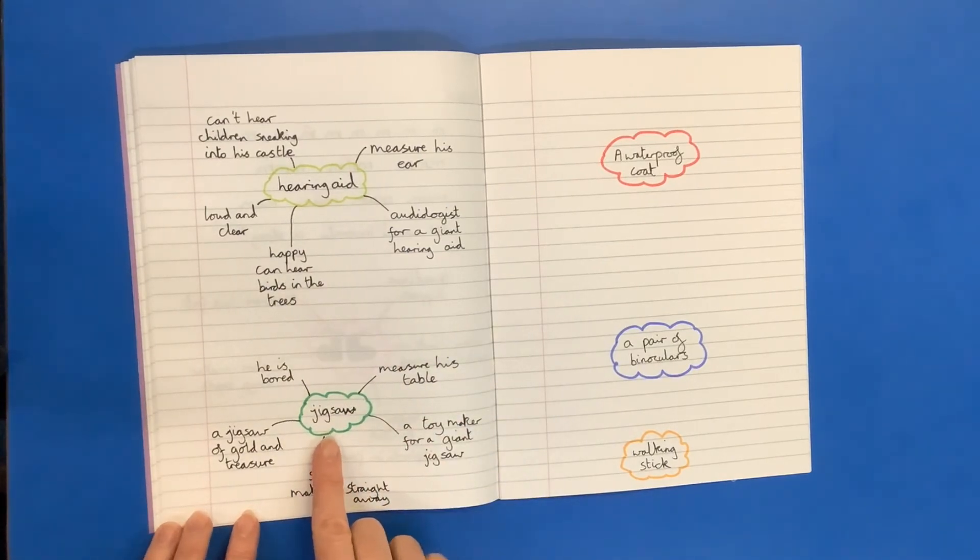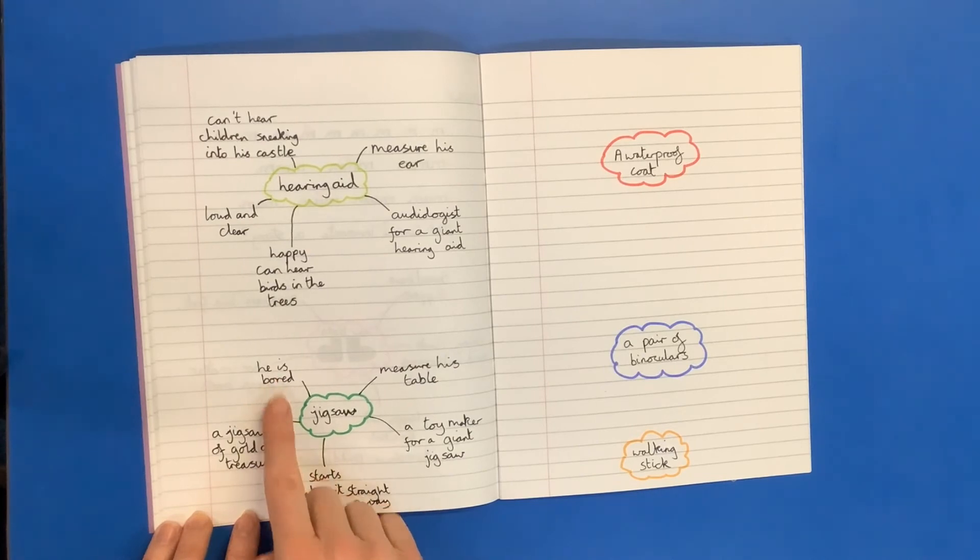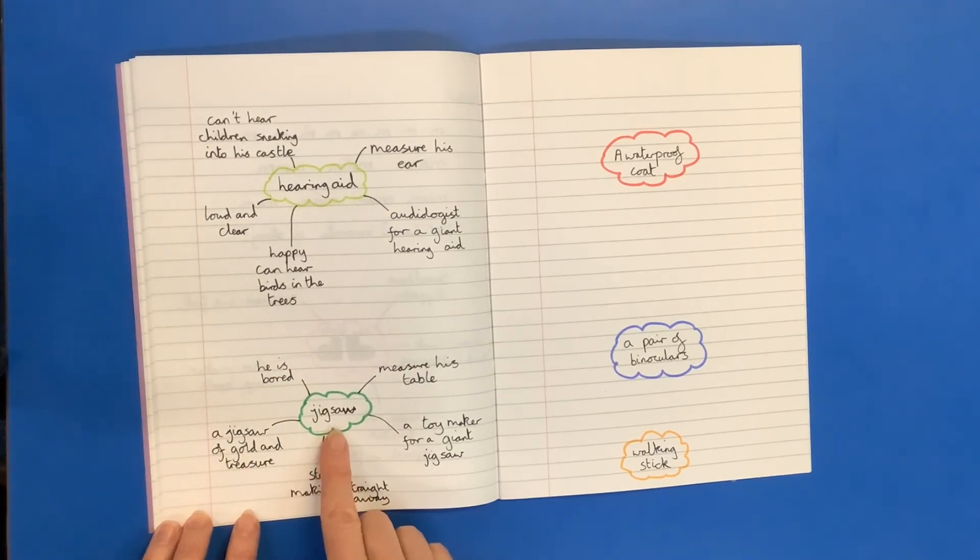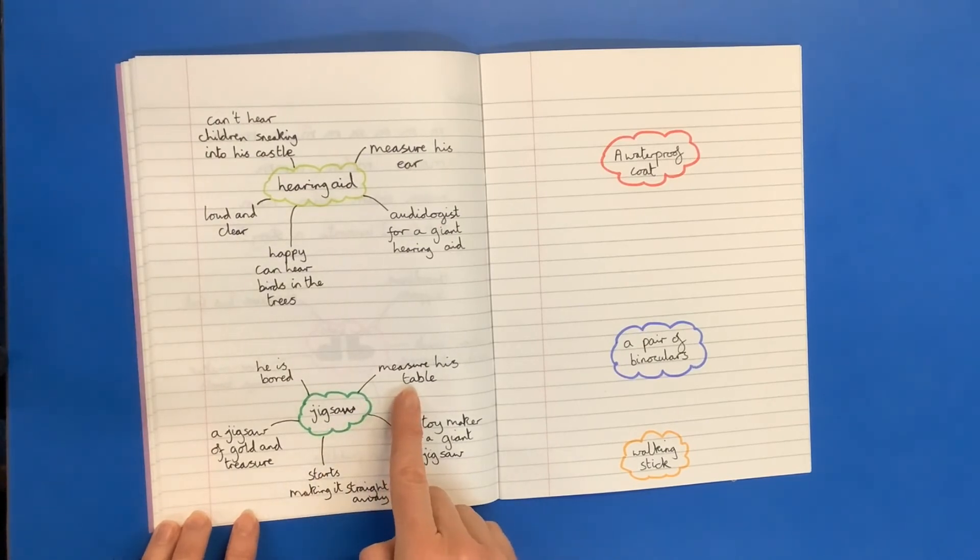Now maybe sitting all alone in his castle he's bored. So I thought maybe a jigsaw might be quite nice. Maybe Jim could suggest a jigsaw. So I thought about what could he measure for that.